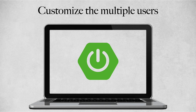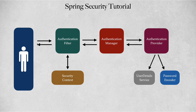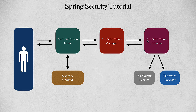Let's begin by looking at the control flow of Spring Security. When a client sends a request, it goes to the authentication filter, which sends it to the authentication manager. The authentication manager identifies the authentication provider used in the application, and the authentication provider internally uses the UserDetailsService as well as the password encoder. We are going to make use of the InMemoryUserDetailsManager to configure multiple users.